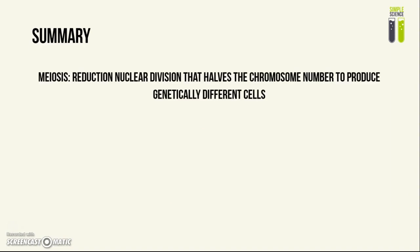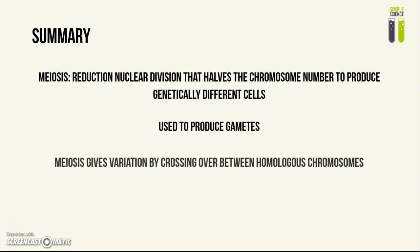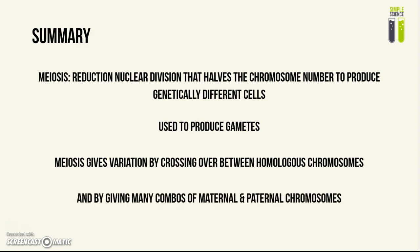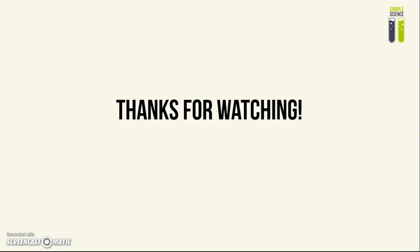To summarize: meiosis is a type of reduction nuclear division which halves the chromosome number of a cell to produce genetically different cells. It is used for gamete production, and it creates variation either by crossing over between homologous chromosomes, or by giving many different combinations of maternal and paternal chromosomes. Thank you so much for watching — I hope this has been helpful. Please leave a like and a comment if you have any questions or suggestions, and subscribe for more.